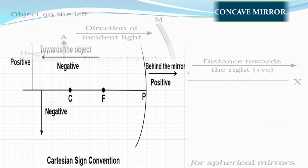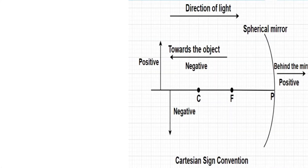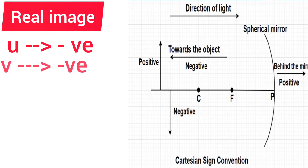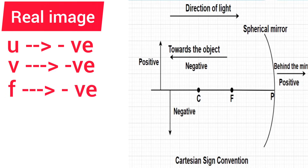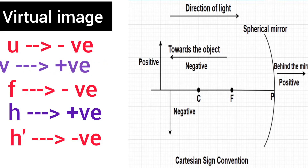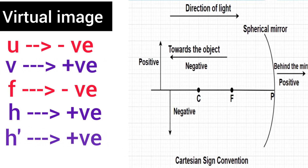Now let's apply these sign conventions for various distances in a concave mirror. In a concave mirror, we usually keep the object on the left side. Since object distance is measured from the pole and it is opposite to the direction of incident light, the object distance u will have a negative sign. The real image formed is in front of the mirror, so image distance also has a negative sign. The focus is also in front of the mirror, so focal length f also has a negative sign. The object standing upright has a positive height, while the inverted image has a negative height. However, when a concave mirror forms a virtual image behind the mirror, the image distance v and the image height h' will both be positive.